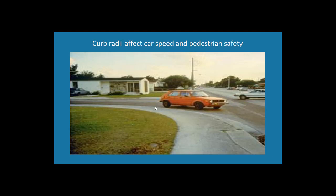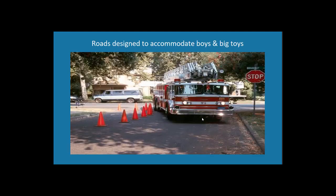Duany talks about little things like curb radii — they're designed for the convenience of drivers so you can take a corner at 35 or 50 miles an hour. But then the pedestrian has to encounter that fast traffic, and it's a longer walk from one corner to the next while exposed to traffic. Duany also talks about how fire trucks have gotten bigger — so they've had to reconstruct streets to be wider, which causes more traffic fatalities. But at least we can have big fire trucks.